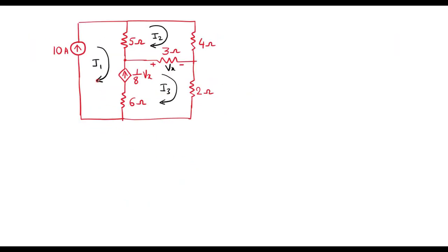From this circuit, we can observe that in loop I1, there is already a current source. So we can say that current I1 is equal to 10A.